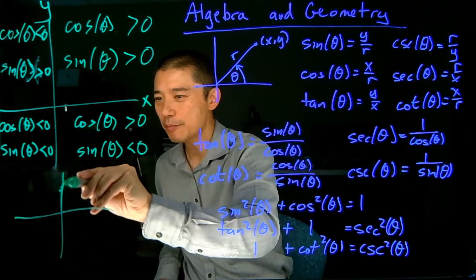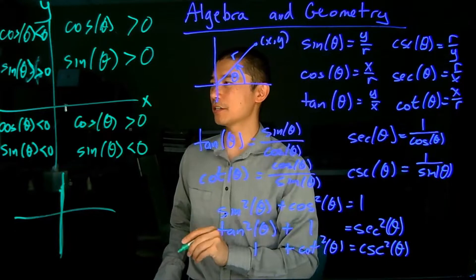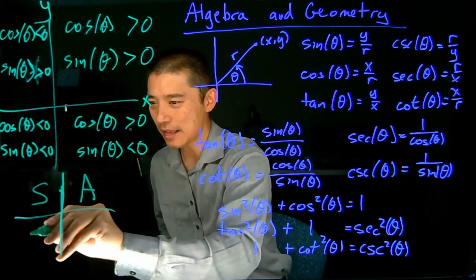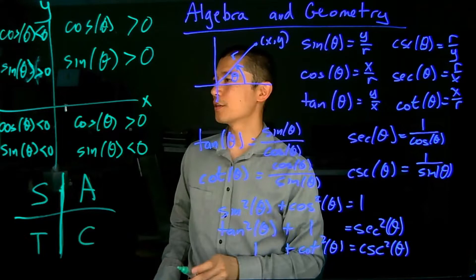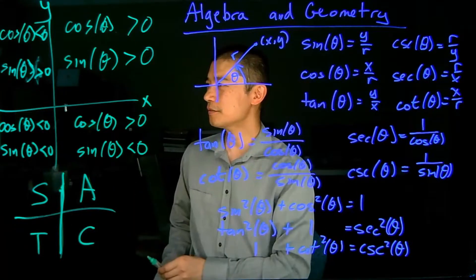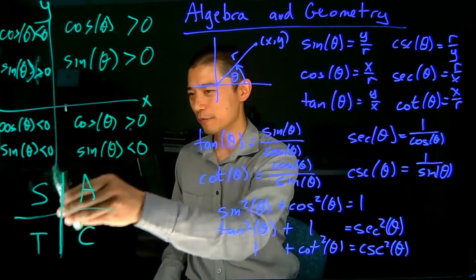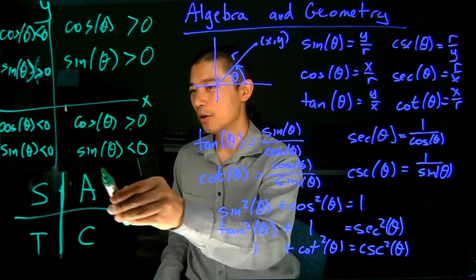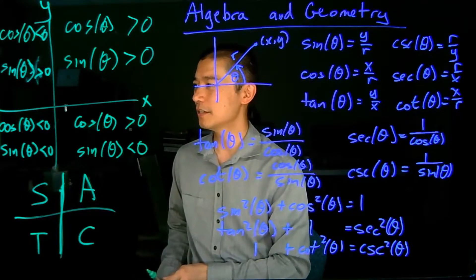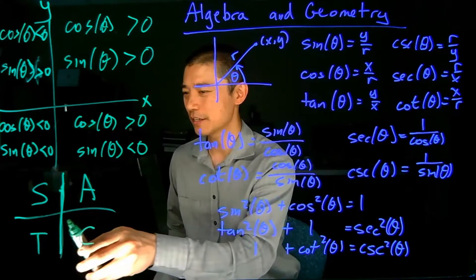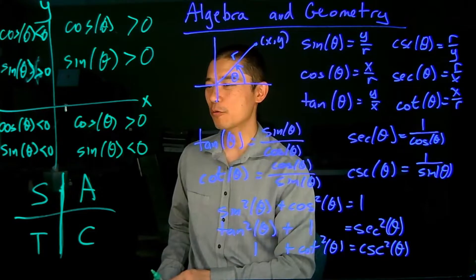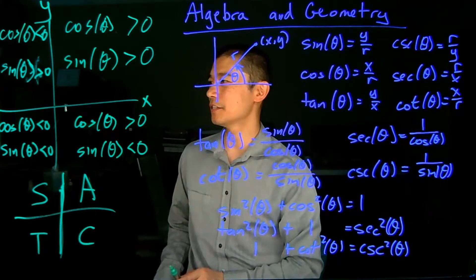There is a quick mnemonic device for keeping track of this information. There are all sorts of different phrases you can use, but the typical one is 'all students take calculus,' going around from quadrant one, two, three, and four. All are positive in the first quadrant, sine is positive in the second quadrant, tangent is positive in the third quadrant, cosine is positive in the fourth quadrant, and if it's not listed here, it's negative.